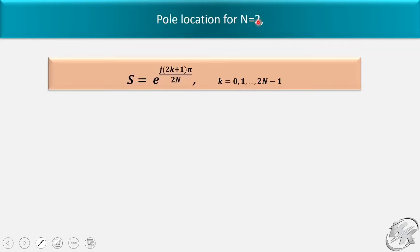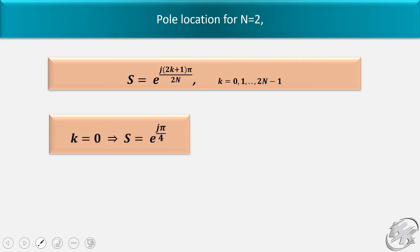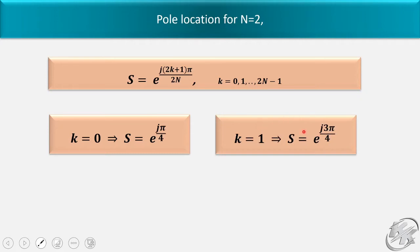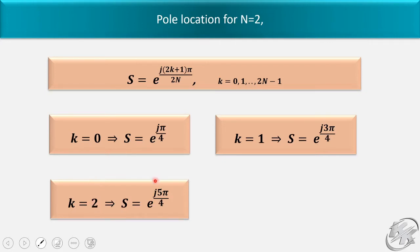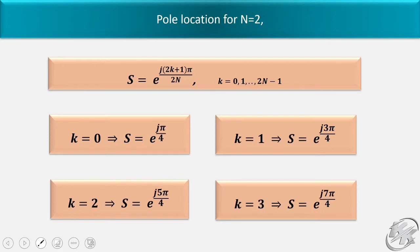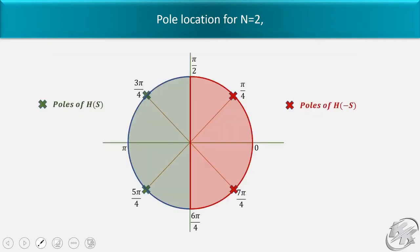Let's see the pole locations for n equal to 2. Putting n equal to 2 in the equation and then varying k: for k equal to 0, the pole is at e^(jπ/4); for k equal to 1, s equal to e^(j3π/4); for k equal to 2, s equal to e^(j5π/4); and for k equal to 3, s equal to e^(j7π/4). The poles are located at π/4, 3π/4, 5π/4, and 7π/4.